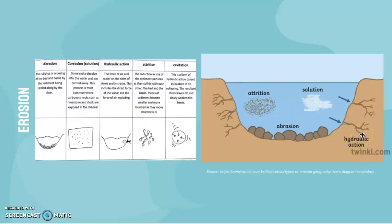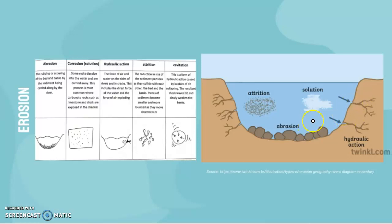Hydraulic action is basically the sheer force of air and water on the sides of rivers and in the cracks — it gets into the cracks and causes mini explosions that erode the bed and banks of the river. Then we have attrition, which is the reduction in the size of sediment particles as they collide with one another, the bed, and the banks, but mostly with each other.